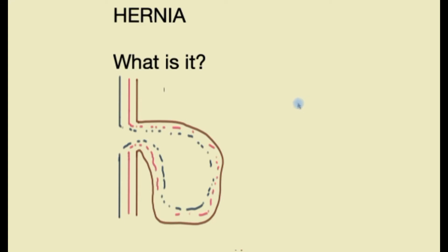This is a short video explaining the concept of a hernia, or rupture. In the simplest form, a hernia is said to have occurred when an internal part of the body pushes through a weakness in the muscle or its surrounding tissue wall. That may also mean that whatever is inside one part may travel to another part because of that weakness.